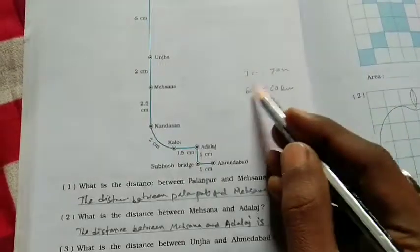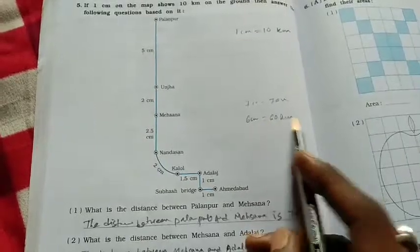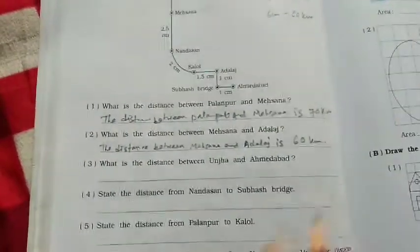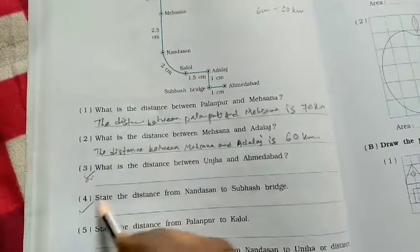One centimeter means 10 kilometers, so 6 centimeters is 60 kilometers. So students, you know, actually this is homework for you, this is also homework for you, this is also homework for you.